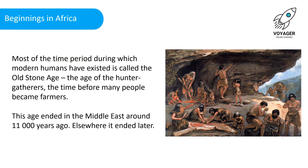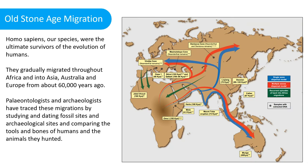Most of the time period during which modern humans have existed is called the Old Stone Age, the age of the hunter-gatherers, the time before many people became farmers. This age ended in the Middle East around 11,000 years ago, and elsewhere it ended later. Homo sapiens gradually migrated throughout Africa and into Asia, Australia and Europe from about 60,000 years ago. Paleontologists and archaeologists have traced these migrations by studying and dating fossil sites and comparing the tools and bones of humans and the animals they hunted.